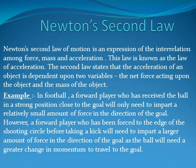Newton's Second Law of Motion is an expression of the interrelations among force, mass, and acceleration. This law is known as the law of acceleration. It states that the acceleration of an object depends upon two variables: the net force acting upon the object and the mass of the object. For example, in football, a forward player who has received the ball in a strong position close to the goal will only need to impart a relatively small amount of force in the direction of the goal.